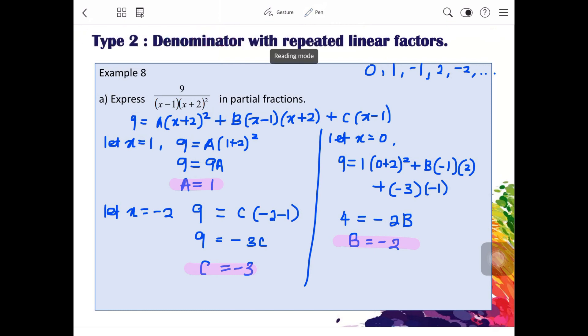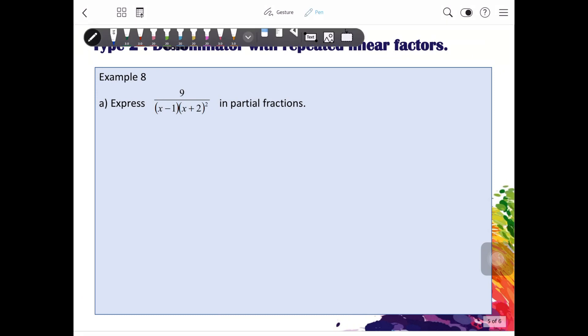To write our final answer. We will write 9 over x minus 1, x plus 2 squared is equals to 1 over x minus 1 minus 2 over x plus 2 minus 3 over x plus 2 bracket square. So, this is your final answer.